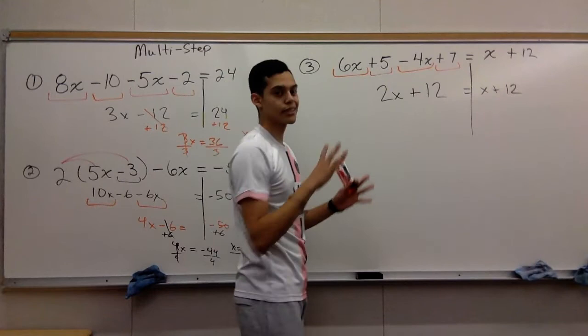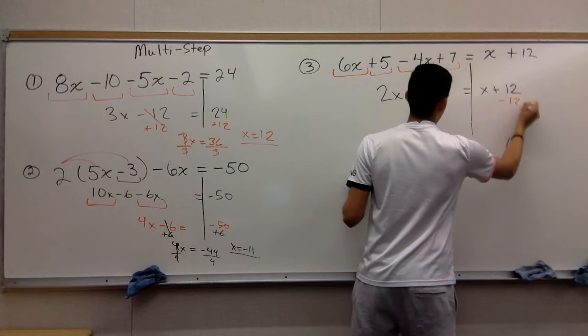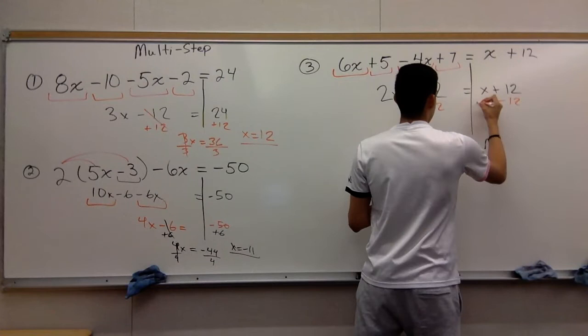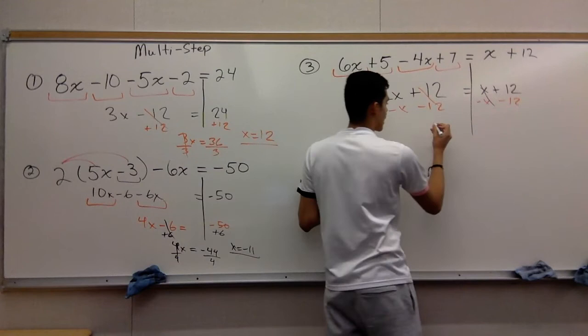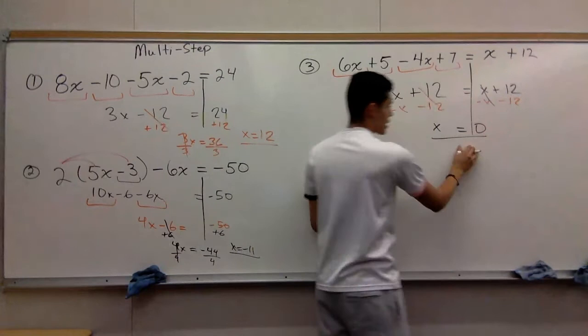Like I said in the previous video, x to one side, constants to the other. Subtract 12 - that disappears. Subtract 12 over here. Move the x to the other side, so you get minus x. Rewrite the problem. This x disappears. 2x minus x gives you x. 12 minus 12 gives you zero. That's your final answer. X can be zero.